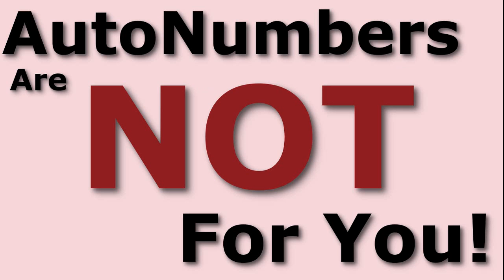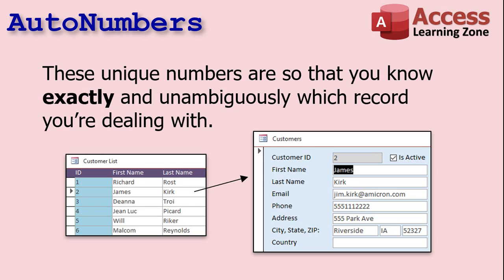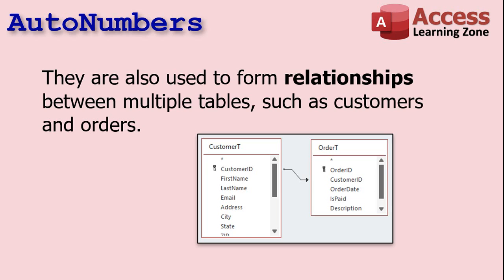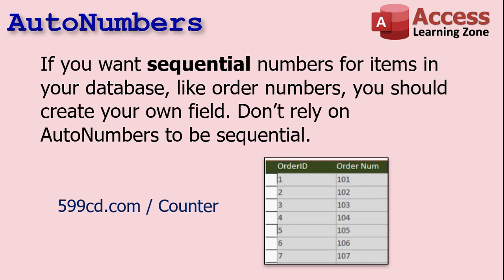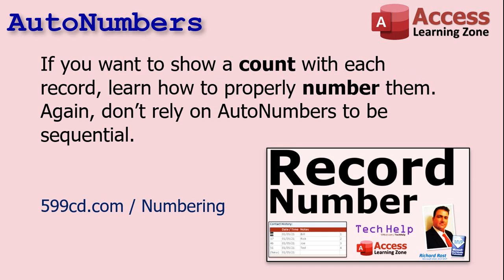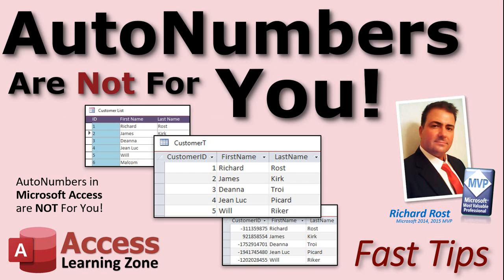The bottom line is those auto numbers are not for you. Don't worry what they are — whether it's customer number 6 or customer number 14. Those auto numbers are for making relationships between tables and for doing things like opening a specific customer from a customer list. Those are things that Access cares about. You can hide the customer ID completely and the workings of the database will make absolutely no difference. If you want a custom order number, make your own. If you want sequential record numbering, make your own — and I've got videos that show you how to do all that. It's all on my website, AccessLearningZone.com. Links to all these videos will be in the description below.